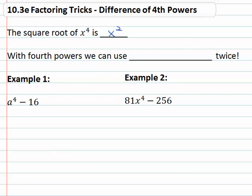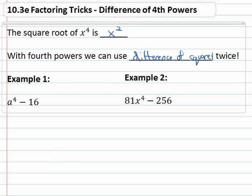Square root really just divides the exponent by two, which means if we can take the square root of x to the fourth, with fourth powers we can use the difference of squares formula. In fact, we get to use it twice sometimes.